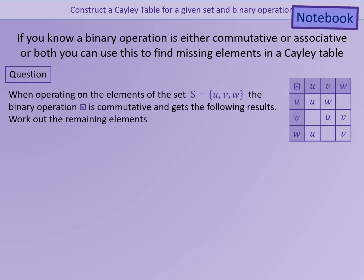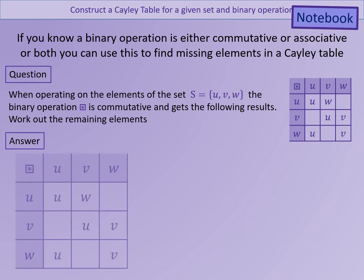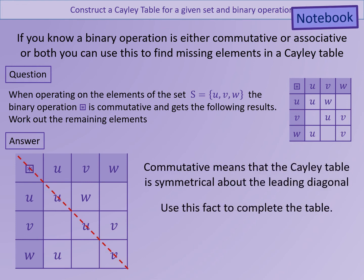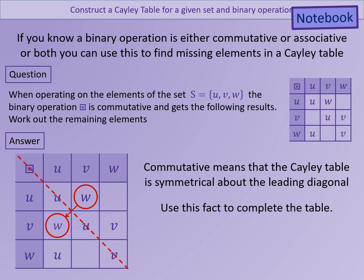For example, a partial Cayley table for an operation on the set U, V and W is given. We are told that the operation is commutative, and from this we can conclude that the Cayley table will be symmetrical about the leading diagonal. Therefore, the missing elements can simply be filled in from the other side.